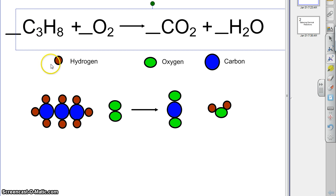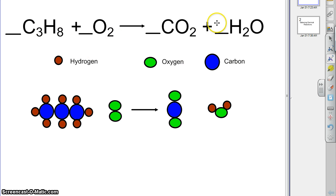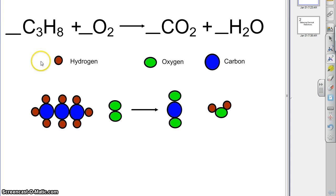So those amounts are set — the C3H8, the O2, CO2, that's the formula of carbon dioxide, and we all know that H2O is water. So we need to balance this, but we cannot change any of the subscripts — the small numbers at the bottom. All we can do is put coefficients, big numbers out in front of each chemical formula, which tells us how many of those whole groups we have.